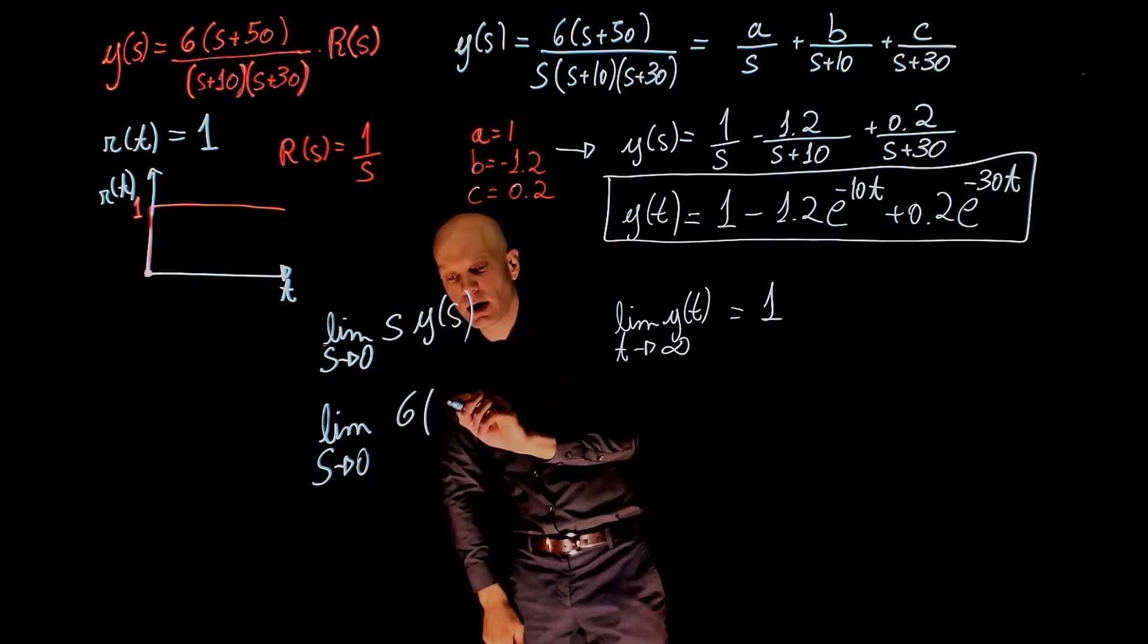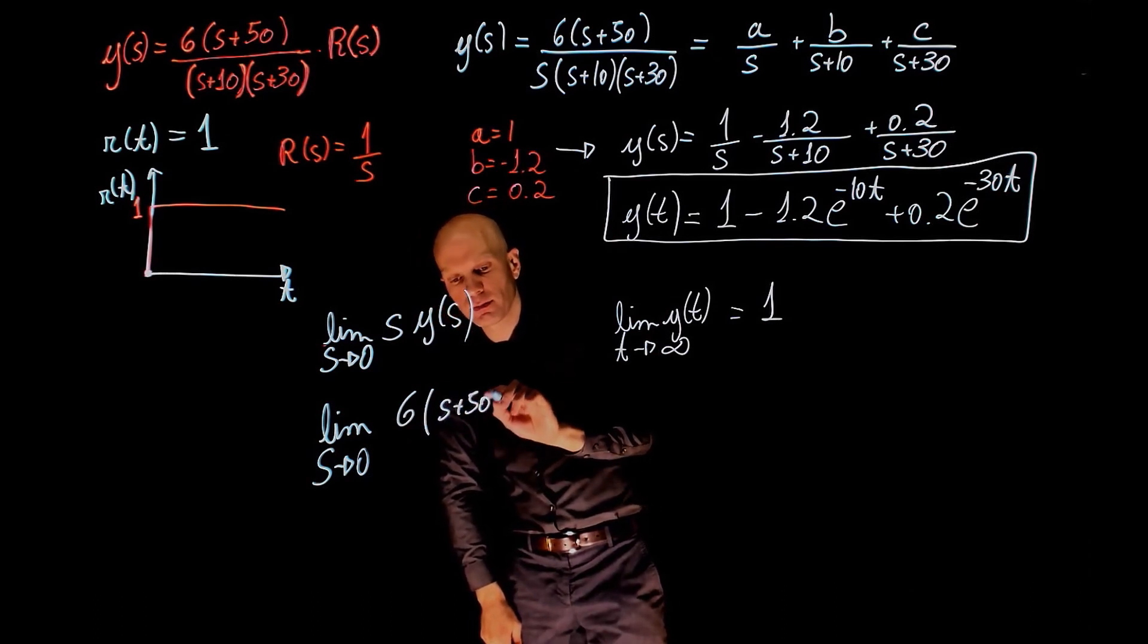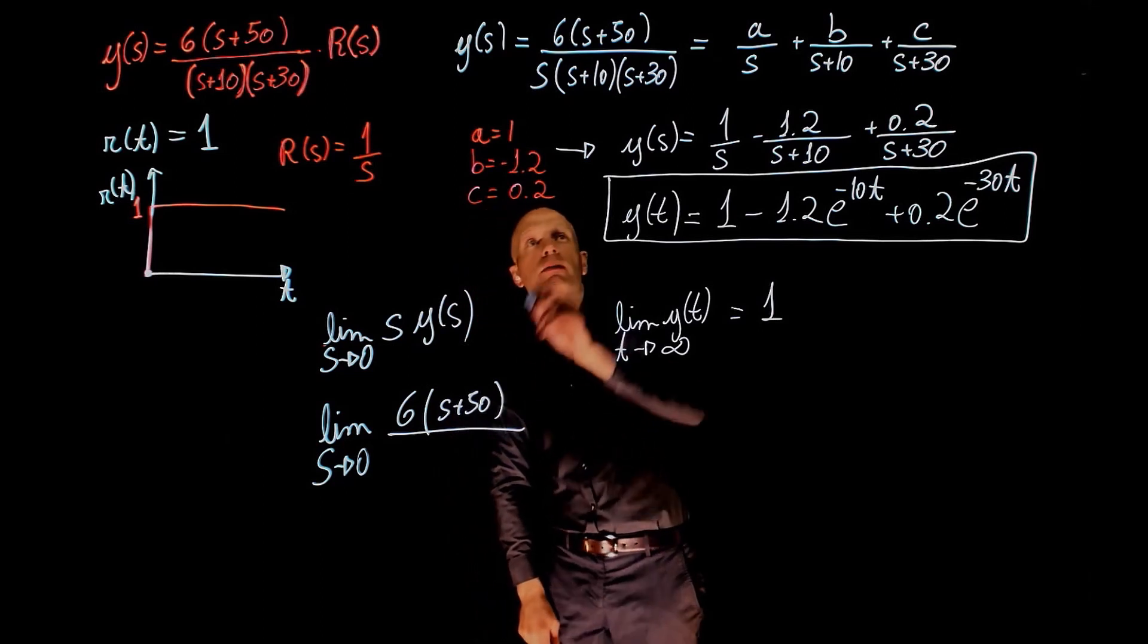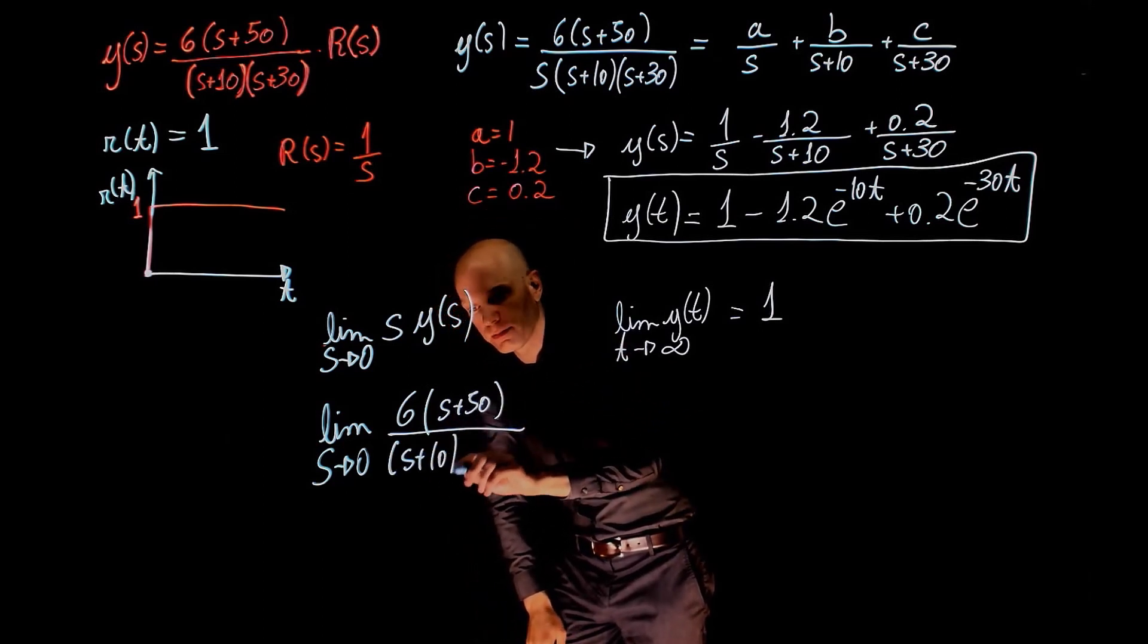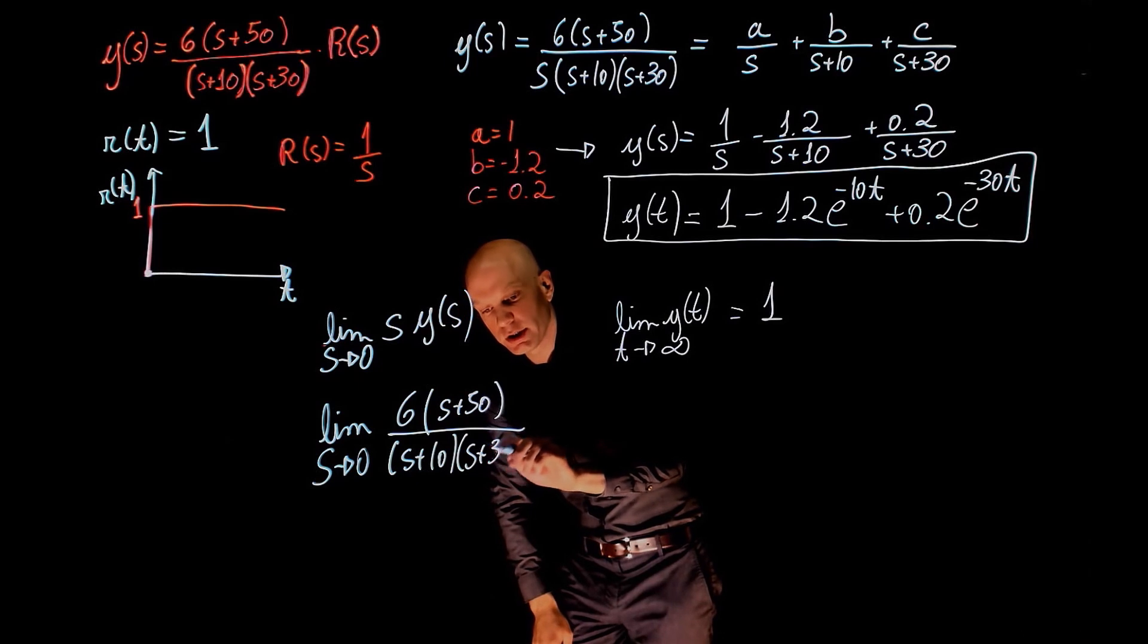6 times s plus 50 divided by s plus 10, s plus 30.